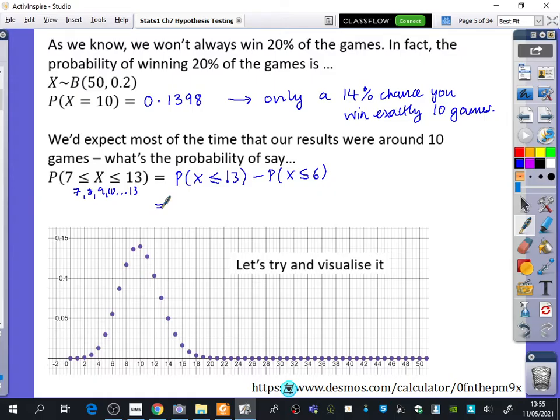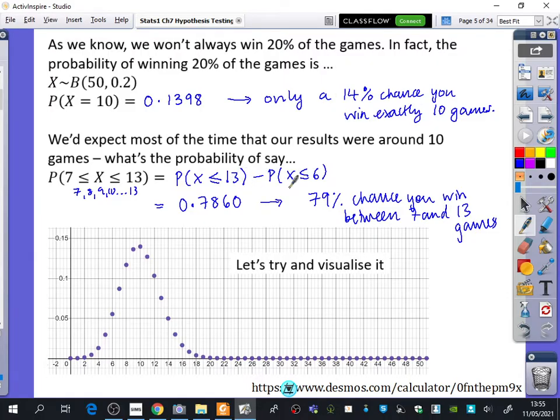If you can just use the graphics, can you tell me what is the probability between 7 and 13? Andrew? 0.7860. In other words, there's a 79% chance you win between 7 and 13 games. So interestingly now, when you're playing a game lots and lots of times, although we expect it to be 10 times, it's quite rare that it would be exactly 10 times. When you start broadening out that range of different things that you might expect to see here, the probability jumps up because you're adding up lots of probabilities together that are a bit higher.